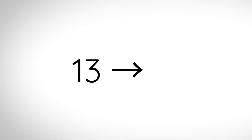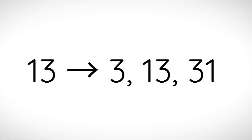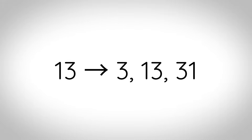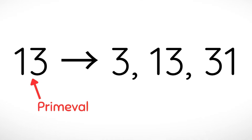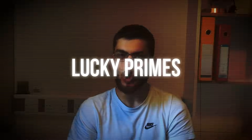Primeval primes: these are the prime numbers where the number of ways to arrange the digits into another prime is more than all the previous numbers. For example, 13 can be arranged into 3, 13, and 31, which is a total of three primes and more than any other previous prime number.